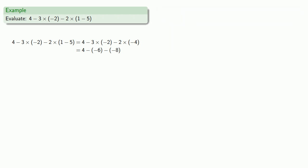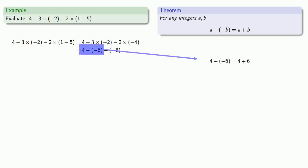So now I have subtractions which I should perform from left to right. 4 minus negative 6. Our theorem says that a minus negative b is the same as a plus b, so 4 minus negative 6 is the same as 4 plus 6 which is 10, and then now I have 10 minus negative 8. Our theorem says that that's the same as 10 plus 8 which gives us our final answer of 18.